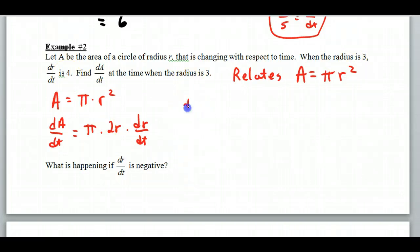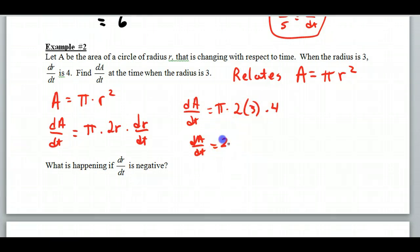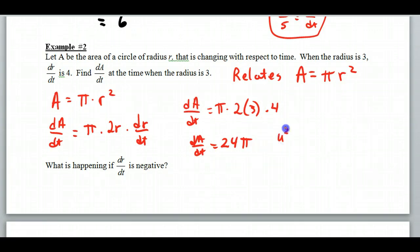Now I can plug these things in. dA/dt equals pi times 2, the radius is 3, times dr/dt which is 4. Simplifying: 6 times 4 is 24π. What kind of units would I have? This is how area is changing with respect to time — it'd be units squared per your time unit, so it might be meters squared per second.